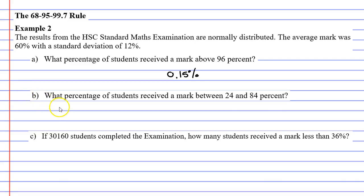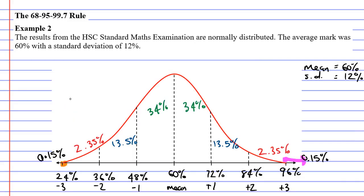Question B: what percentage of students received a mark between 24% and 84%? So we're going to start at 24% and go all the way across to 84%. What percentage of students are in this orange region here? We need to add up all the percentages that lie above that orange line. We need to add 2.35% to 13.5% to 34% and 34% again and also add 13.5%. Let's do that now.